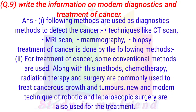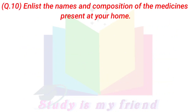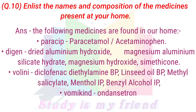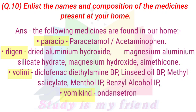Question 10: List the names and composition of the medicines present at your home. Answer: The following medicines are found in our home. Paracetamol - composition: Acetaminophen. Dysin - composition: Dried Aluminium Hydroxide, Magnesium Aluminium Silicate Hydroxide, Magnesium Hydroxide, Simethicone. Volini - composition: Diclofenac.